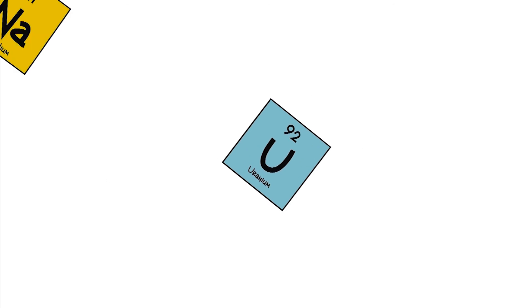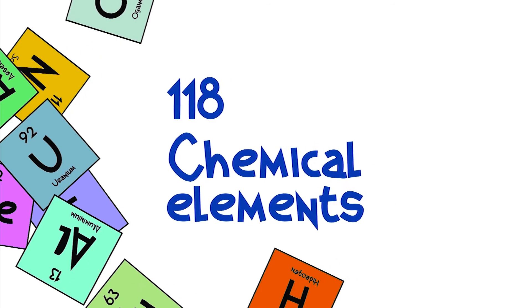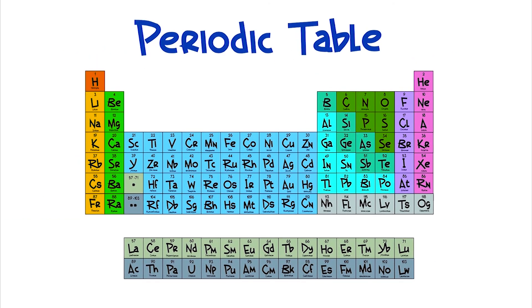But there are several types of chemical elements. Today we know 118 elements organized in a worksheet that we call periodic table.